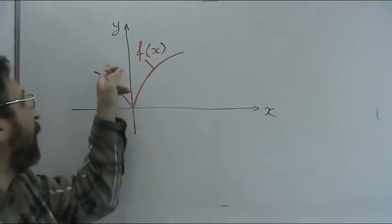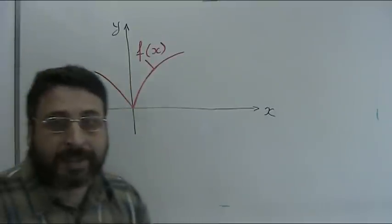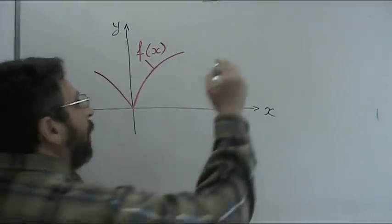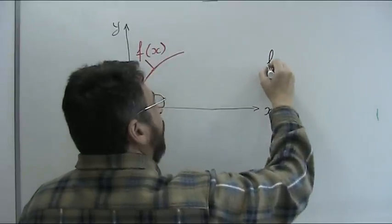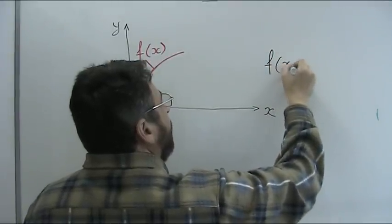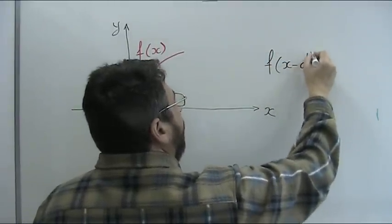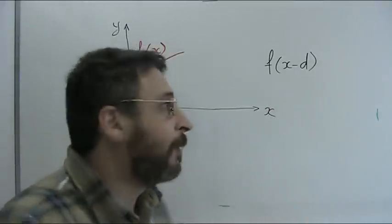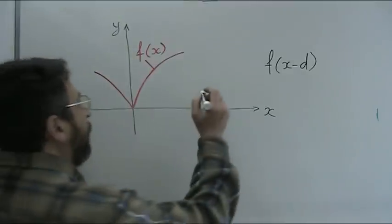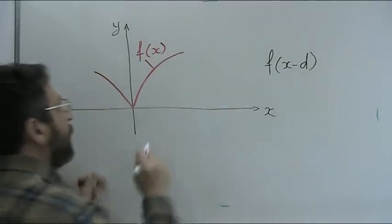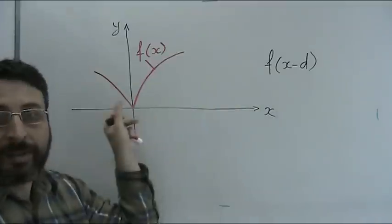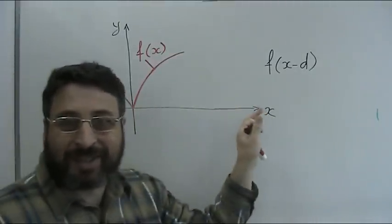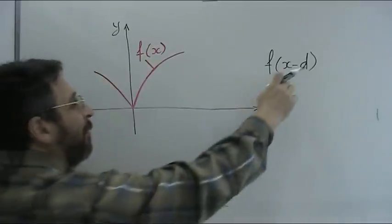Suppose I have a function f and I ask a question: how would look a graph of function f(x-d), where d is a constant number? My claim is that this will be a graph of the same form, only shifted right by d.